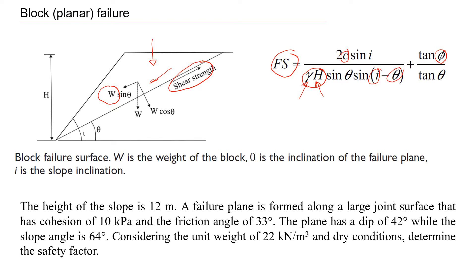Angles come here. It's shown here. This is i. That will be the angle of the slope or face of the slope. And this one is theta. It's the angle of this failure plane. You see, this is the failure plane and this part is stable.